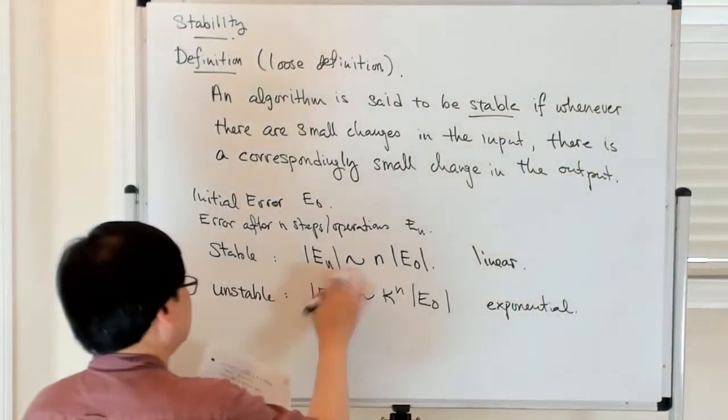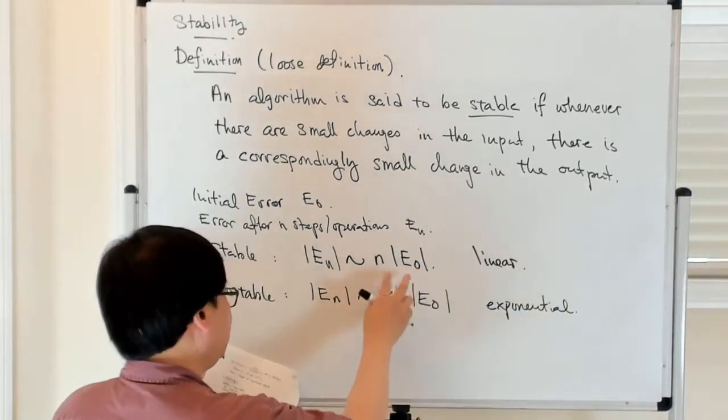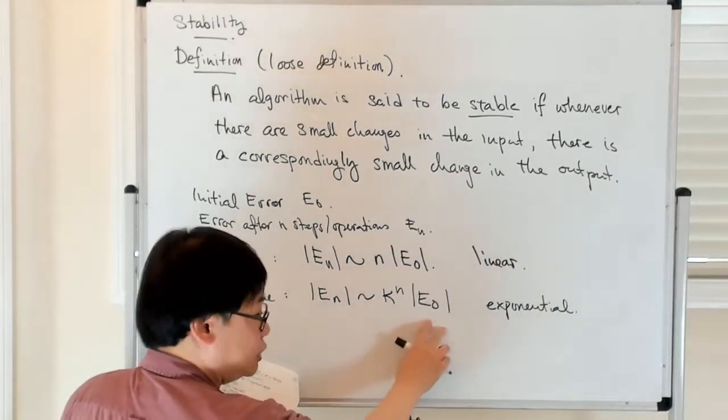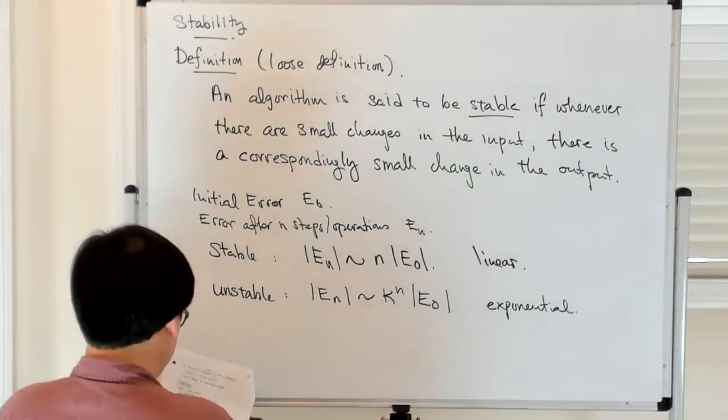So more generally, if you have some sort of polynomial growth, that's considered fairly reasonable, but you really don't want to have the situation where there's exponential growth in the error.